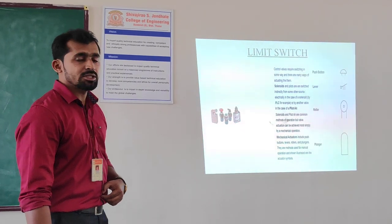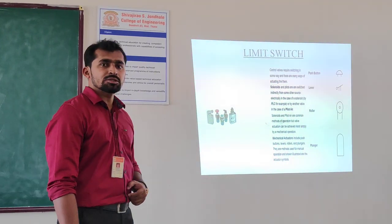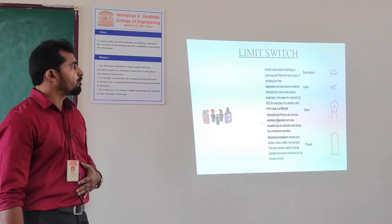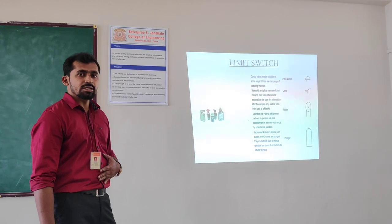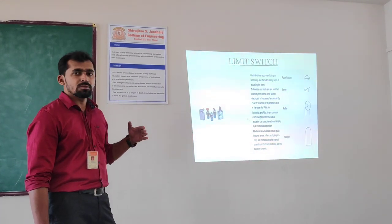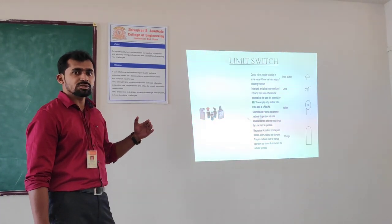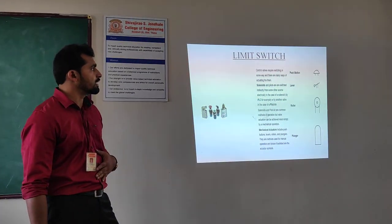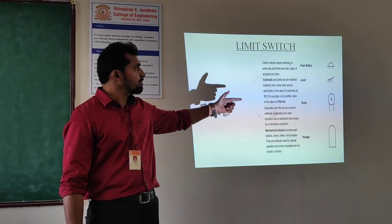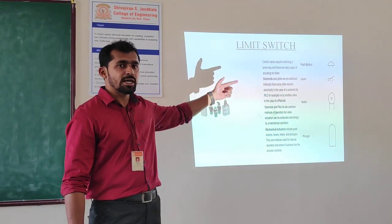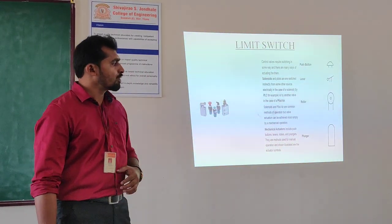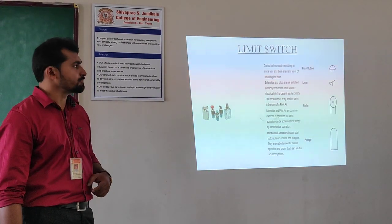Next is a limit switch. A limit switch is one part of a sensor that is used for positioning — that is, the position of the piston rod of single acting as well as double acting cylinders. In the limit switch there are different types like push button, lever, roller, plunger, etc.